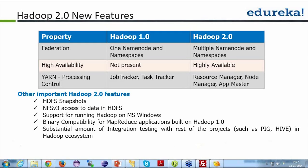In Hadoop 2.0, there is a concept of Federation where you can have multiple NameNodes. The reason for this is that with a single NameNode you can only scale vertically up to a certain limit. The NameNode contains metadata and must process it fast. After you've reached a certain cluster size, scaling further becomes an issue. This is because the RAM capacity of the NameNode reaches its vertical limit, causing performance issues.